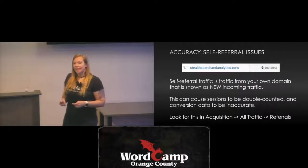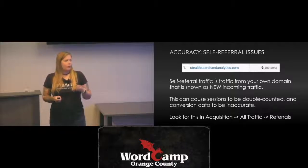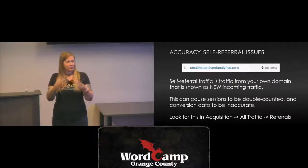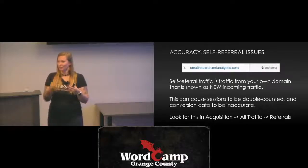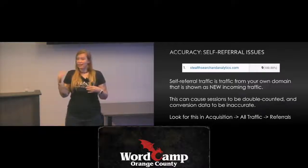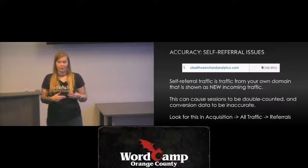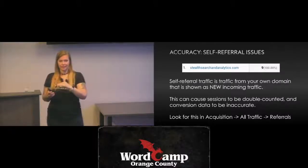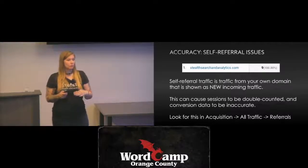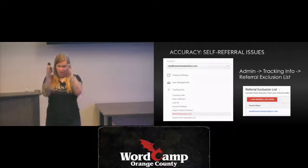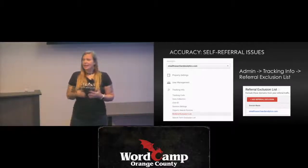Next, you want to look for and resolve self-referral traffic issues — when you have traffic listed as incoming new traffic under your referral sources, but it says it's coming from your own website. Referral traffic is supposed to report on external traffic; you can't have external traffic from your own internal website. If you see that, it can mean sessions are being double-counted and conversion data can get messed up. Go to Acquisition > All Traffic > Referrals in Google Analytics and look for your own domain name. If you see it, go to Admin > Tracking Info > Referral Exclusion List and add your own domain name.